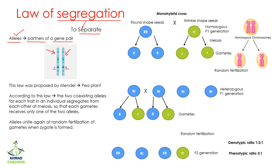The law of segregation was first proposed by Mendel when he was studying the pea plant. According to this law, the two co-existing alleles for each trait in an individual are going to segregate or separate from each other at meiosis. During the process of meiosis, homologous chromosomes are separated from each other.